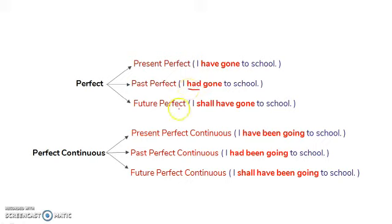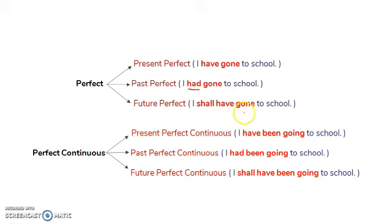In future perfect tense: 'I shall have gone to school.' The same V3 form 'gone' is used, and to indicate that it will happen in the future time, I am using 'shall have'. 'Have' indicates the perfection — the completion of the task.